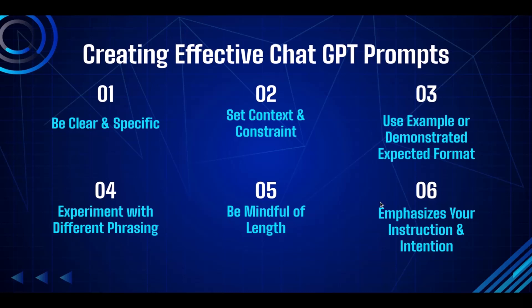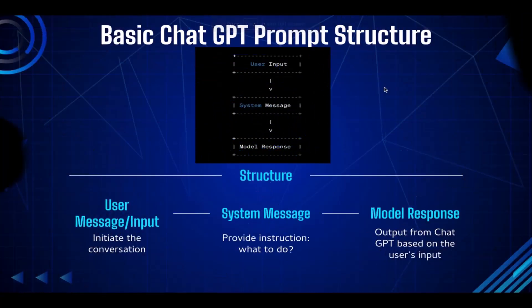The sixth aspect: emphasize your instructions and intentions. Sometimes when people write their prompts, they don't really specify what they want — they don't clearly state instructions like 'ChatGPT, I want you to do this.' That leaves ambiguity and makes ChatGPT unclear on what you want. It's better to clearly emphasize your instructions or intentions in your prompt, making it very clear so ChatGPT can understand what output you're seeking.